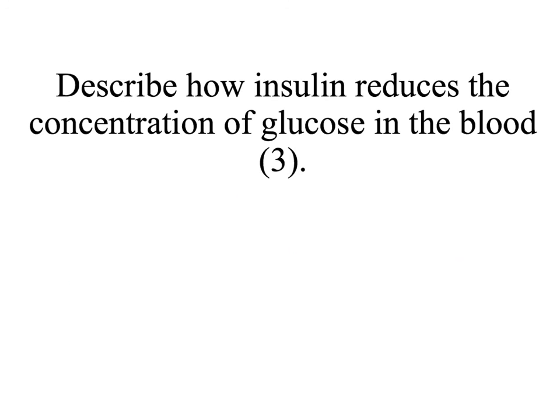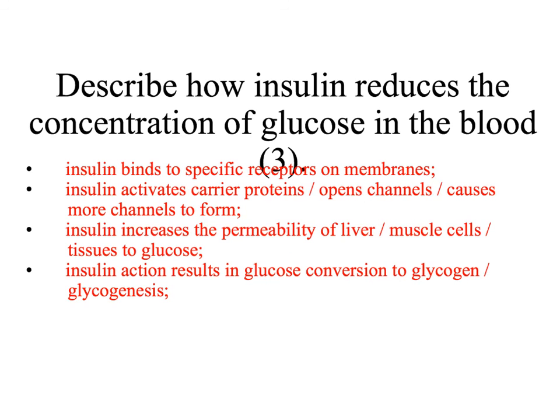A similar question: describe how insulin reduces the concentration of glucose in the blood. Again, insulin is already in the blood — it binds to specific receptors on membranes of liver or muscle cells. It activates carrier proteins or increases the number of carrier proteins in the plasma membrane. This allows glucose to diffuse from the blood into the cells, because the cells have become more permeable to glucose. Once the glucose is inside the cells, it can be stored as glycogen by the process of glycogenesis.